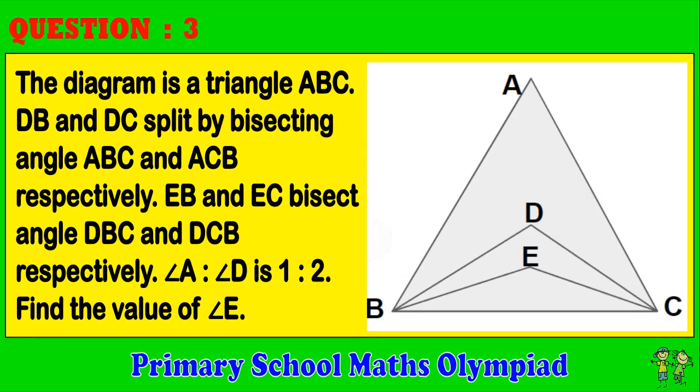Question 3. The diagram is a triangle ABC. DB and DC split by bisecting angles ABC and ACB, respectively. EB and EC bisect angles DBC and DCB, respectively. The ratio of angle A to angle D is 1 to 2. Find the value of angle E.